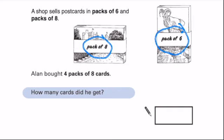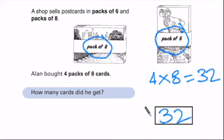Okay, welcome back. 4 times 8 equals 32. So Alan, he needed to buy, he bought 32 cards, because he bought 4 packs of 8.